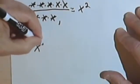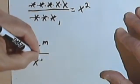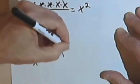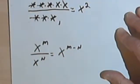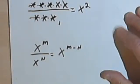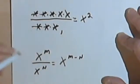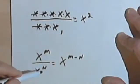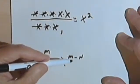So the general rule is: x to the m divided by x to the n is going to be the same as x to the m minus n. You've got two numbers with the same base, each with an exponent. You're dividing one by the other — take the exponent in the denominator, subtract it from the exponent in the numerator, and that gives you the solution.